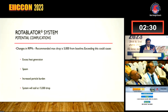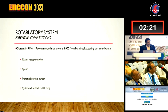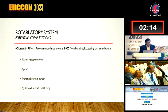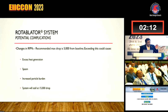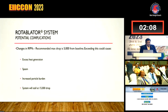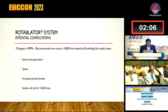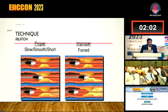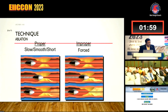What are the important potential complications and how can we avoid them? The recommended maximum RPM drop is 5,000. If you see more than 5,000 drop, it can generate excess heat, cause spasm, and increased particle burden. The system will stall at a 15,000 drop, so be careful. If the pitch of the sound gets altered or you see a drop of more than 5,000, you have to come back and stop. Always do a slow, smooth, short pecking movement rather than forcing the rota down.